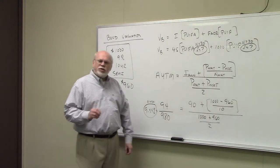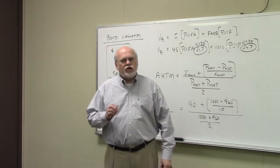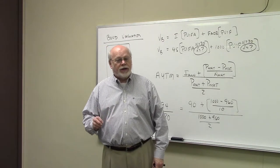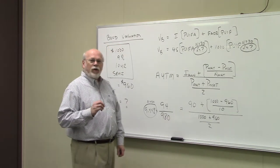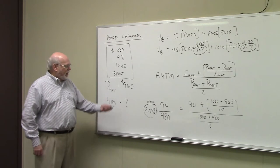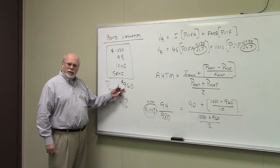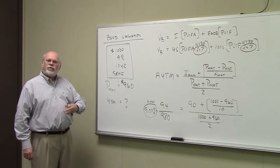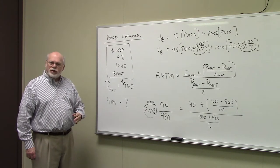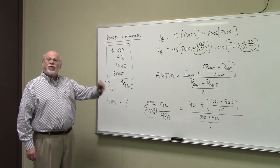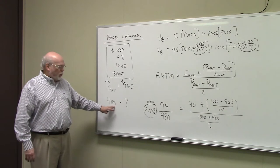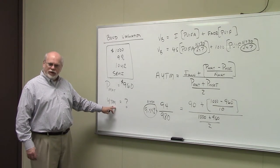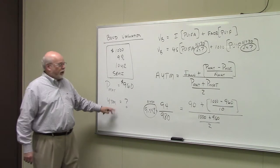A bond's yield to maturity is the internal rate of return on the bond. So, as an investor, you're curious: if I go out in the market and I spend $960 on this bond, and for that investment I get $45 every six months for ten years, and then $1,000 ten years from now, what rate of return would I earn on my bond investment? That rate of return on the bond is referred to as the yield to maturity.